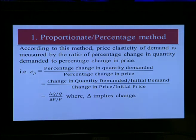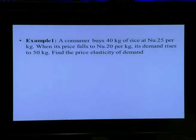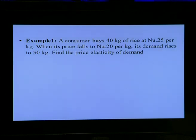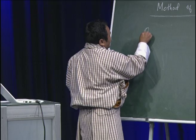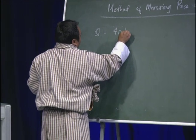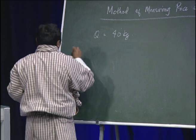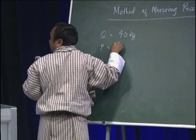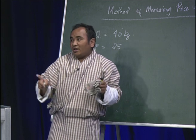Let us look at one example. In this question, a consumer buys 40 kg of rice at Nu 20 per kg. So initial quantity is 40 kg and initial price is Nu 20 per kg. When the price falls to Nu 25 — so P1 equals 25 — quantity demanded rises to 50 kg, so new quantity is 50 kg.